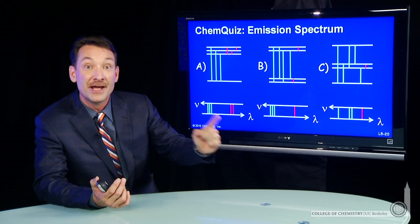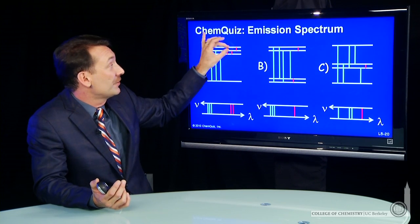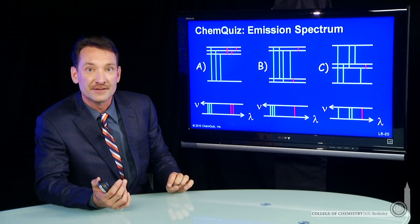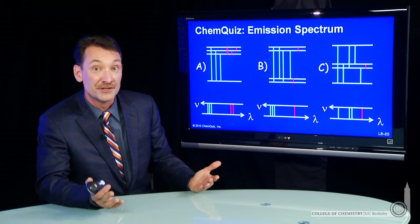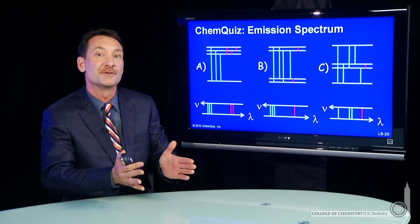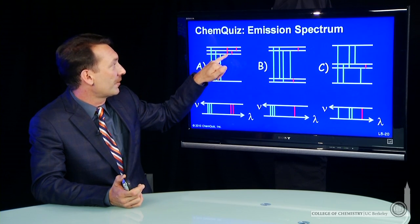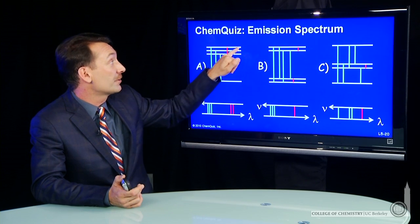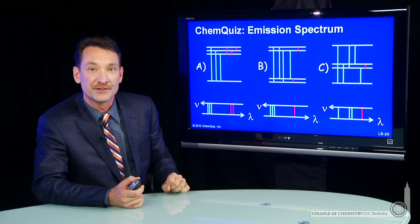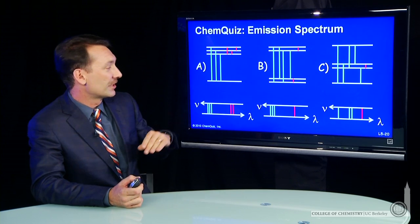They would fall right on top of each other and give you only one line, even though there's two transitions. But the two transitions have the same energy, so we can't resolve them in terms of energy. So you'd get just two lines, one for this transition and one corresponding to both of these transitions. So that doesn't look like the right answer. If we look at B,